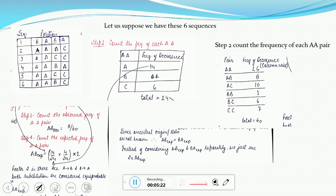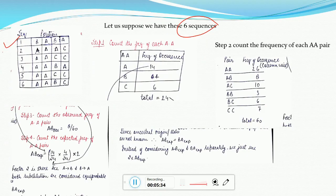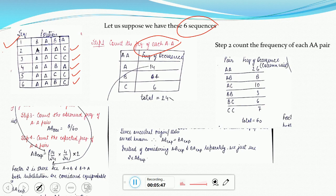The first step in creating a BLOSUM matrix is counting the frequency of each amino acid. Suppose we have six sequences with three amino acids: A, B, and C. Counting how many times A appears across the sequences gives 14. B is counted 4 times and C is counted 6 times. The total number of amino acids is 24.